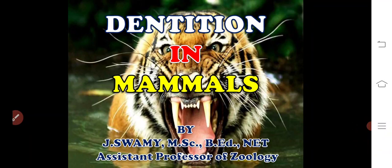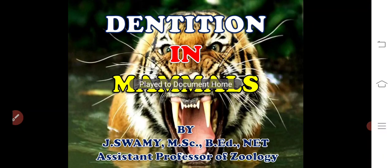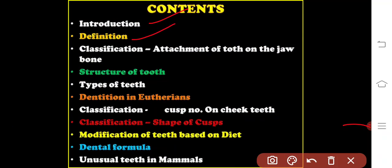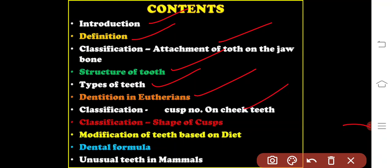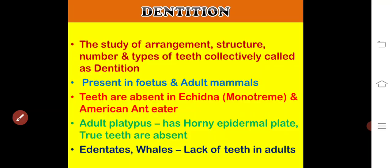In this class we are going to discuss the dentition in mammals. Under this topic we will see the introduction, definition and classification of teeth based upon attachment to the jaw bone, structure of tooth, types of teeth, dentition in eutherian mammals, classification based upon cusp number and shape of cusps, modification of teeth based upon diet of the animal, the dental formula, and unusual teeth in mammals.